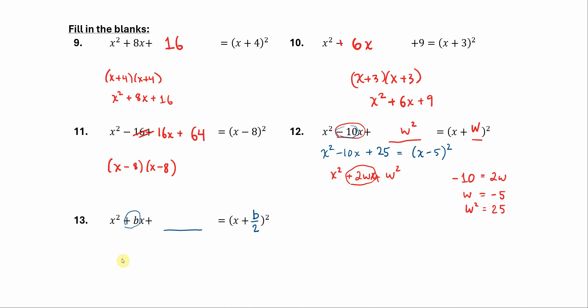And then whatever is in this blank times itself is going to be what goes over here. Okay, so this blank right here is going to be b over 2 times itself, or b over 2 squared. It's like w, b over 2 is w, if you want to compare this problem to the previous one. So you can write b over 2 quantity squared, or you can actually square it and it's really b squared over 4.